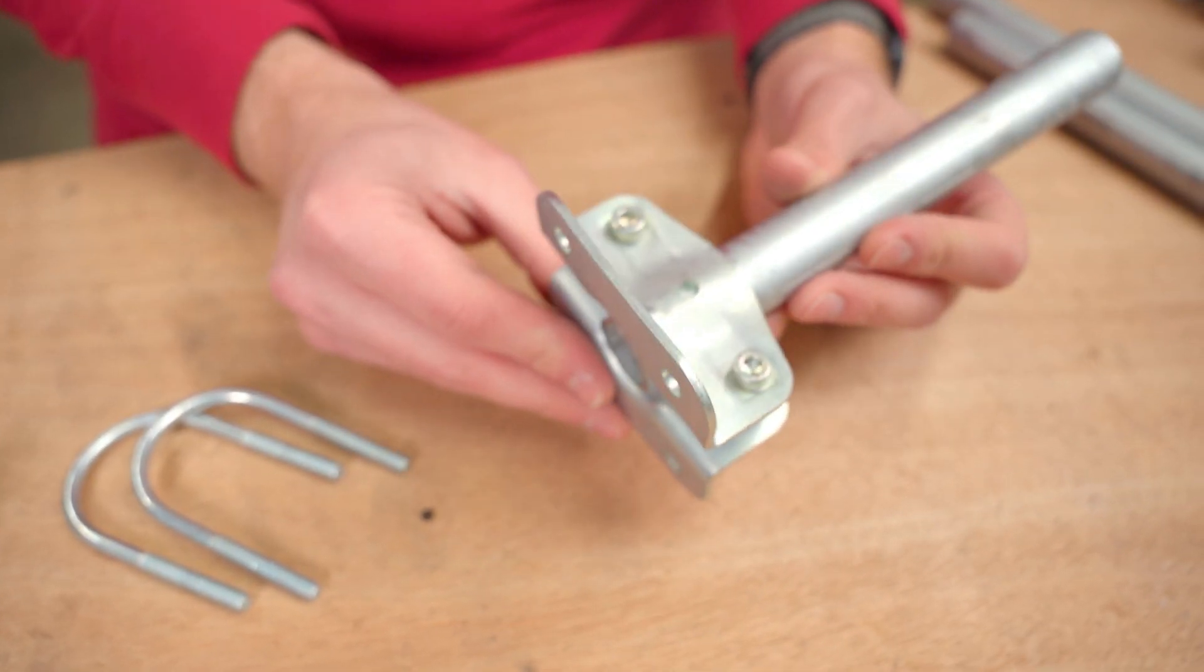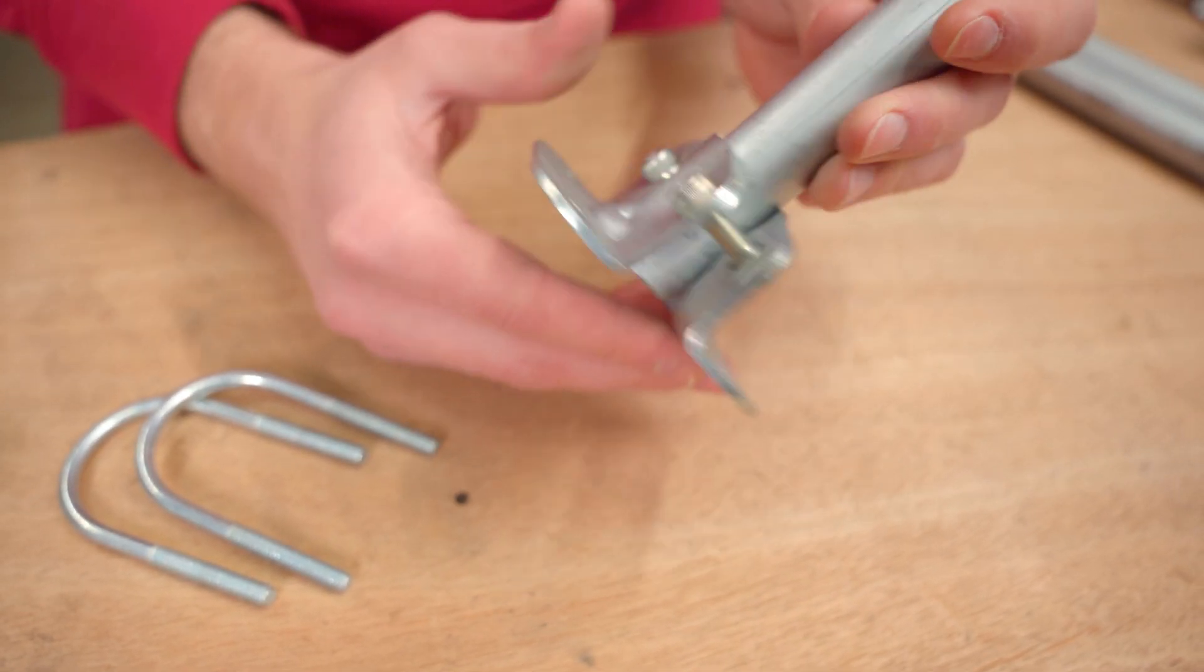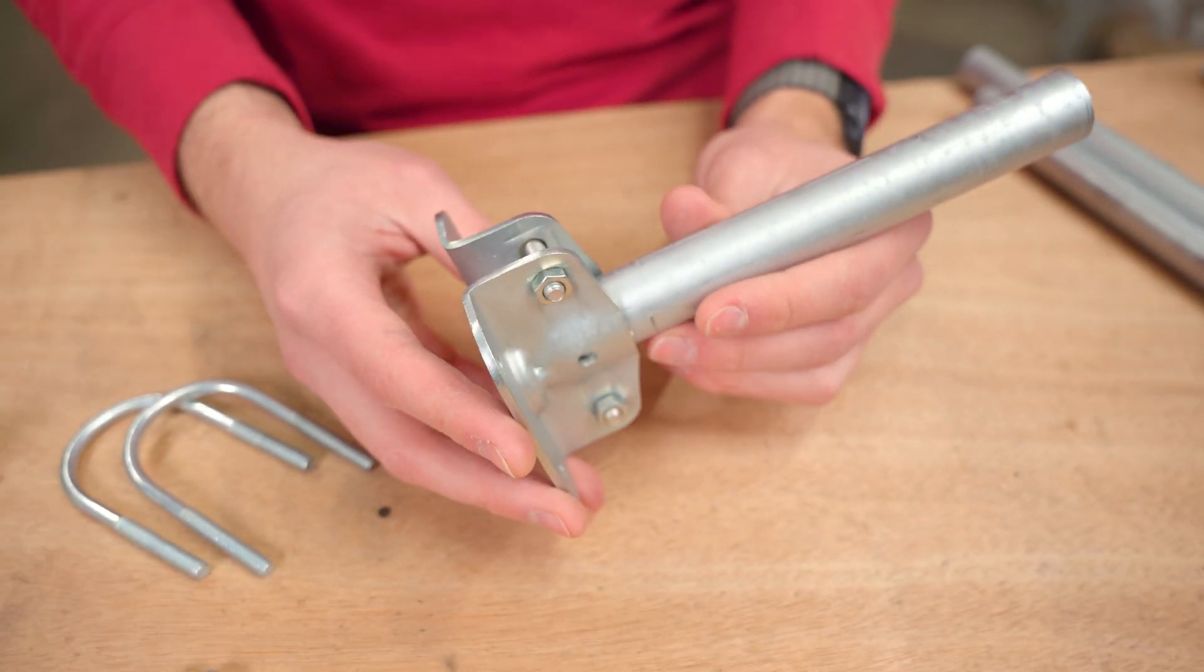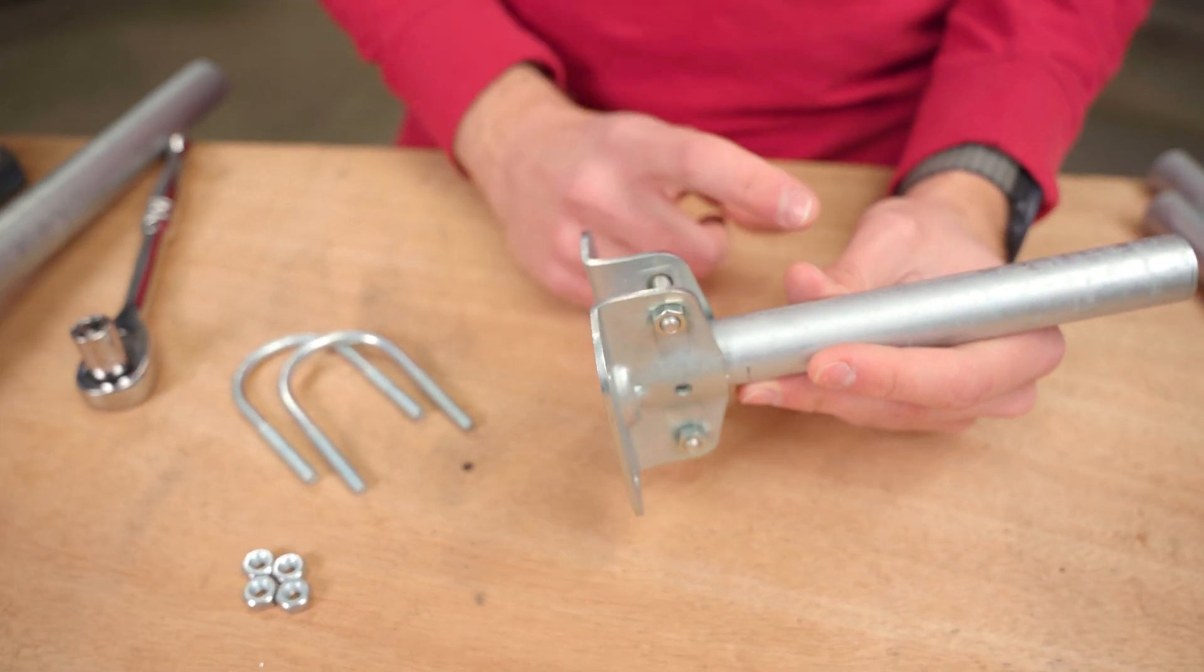As I said, this is the Maker Pipe flange. It's just two pieces that clamp around EMT conduit. I've got three-quarter inch here, but this also applies if you have half-inch EMT or one-inch EMT conduit.